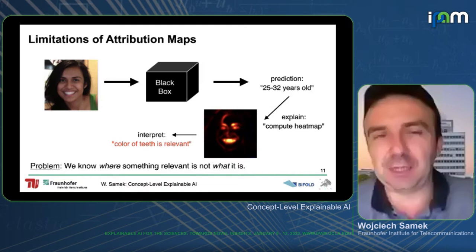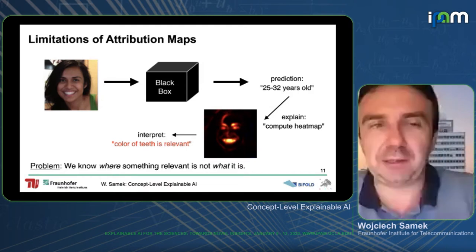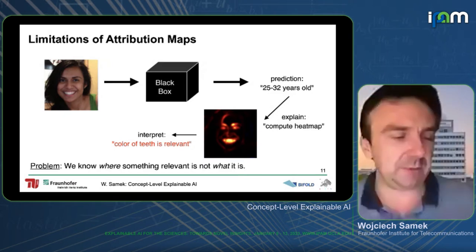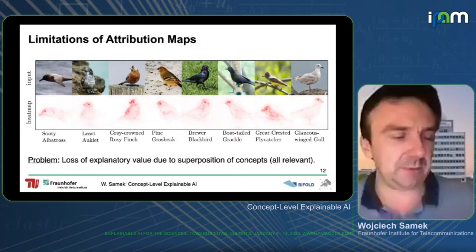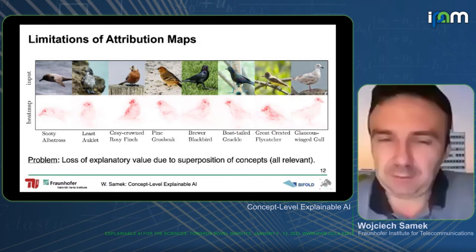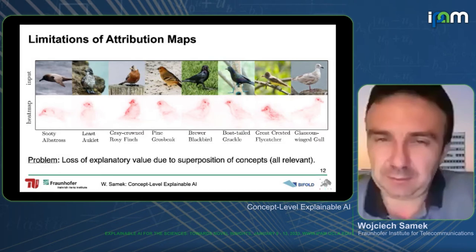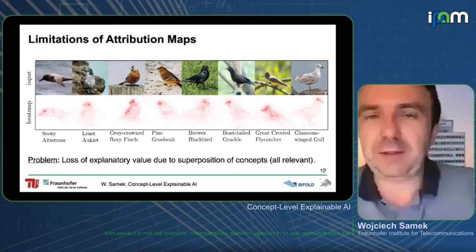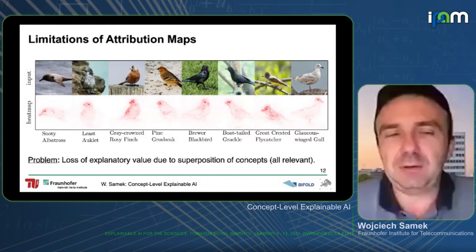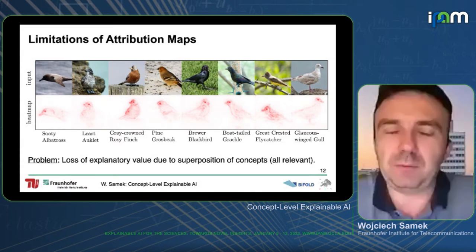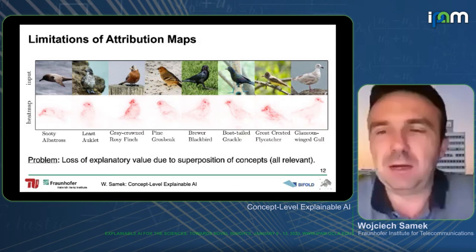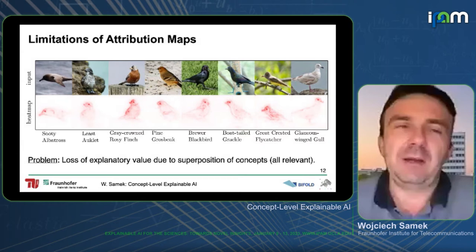We cannot directly get that information from attribution maps — we can try to interpret them, but we cannot directly extract it. A related problem appears with a bird classifier trained on different bird categories: the explanations look very similar, always the beak, the eye, the shape and feathers. The heatmap doesn't tell you what kind of feature it is — is it the color of the beak, or the color or texture of the feathers? This is where our new work enters.